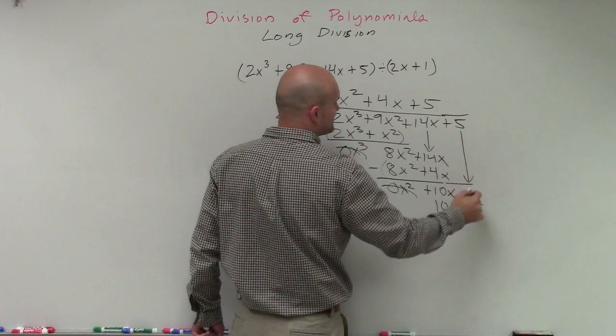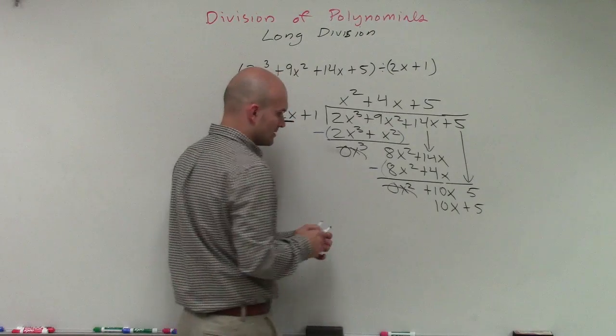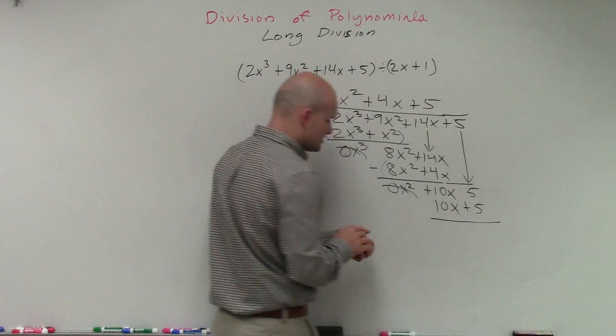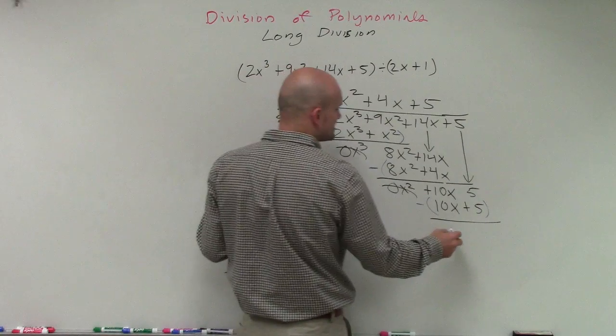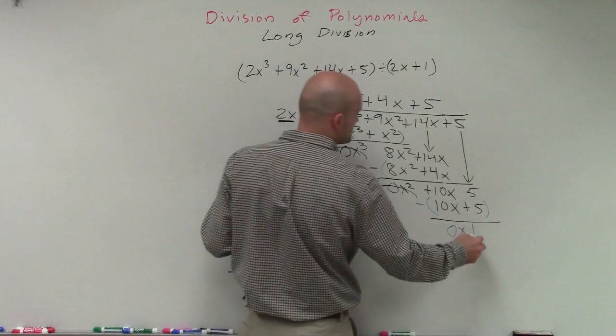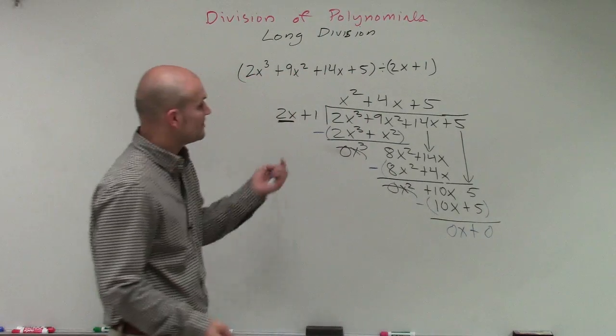Again, I bring down my 5 to subtract the two rows. And when I subtract the two rows, I need to make sure I put them in parentheses. So 10x minus 10x is going to be 0x, and 5 minus 5 is going to be 0.